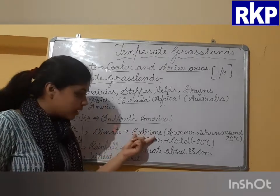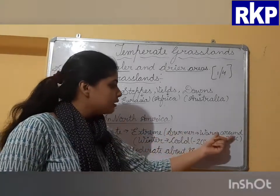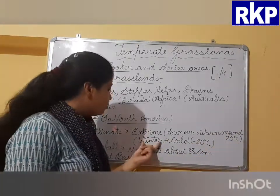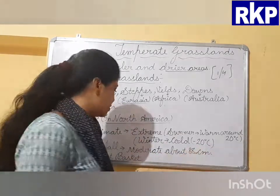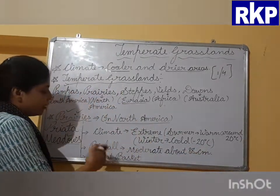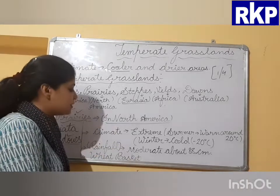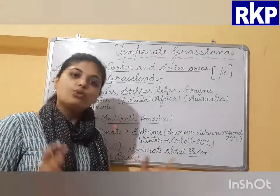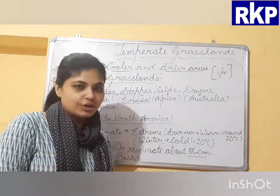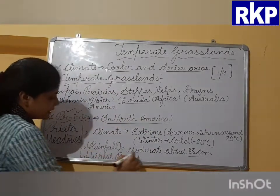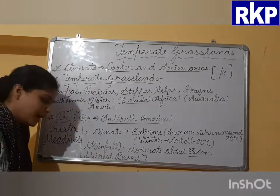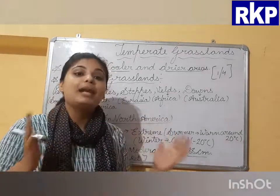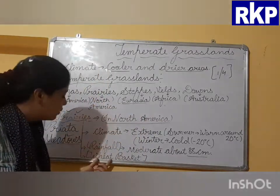The climate of the Prairies is extreme: in summer the temperature is around 20 degrees Celsius, and in winter it drops to minus 20 degrees Celsius. The rainfall is moderate, about 88 centimeters, which is good for the growth of grasses. Prairies are also called the 'wheat basket of the world' because wheat is produced in abundance there.